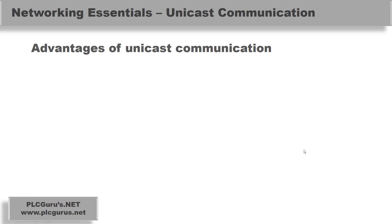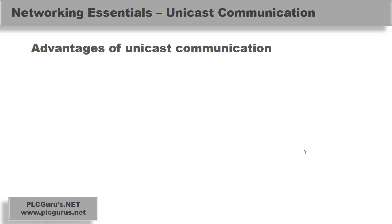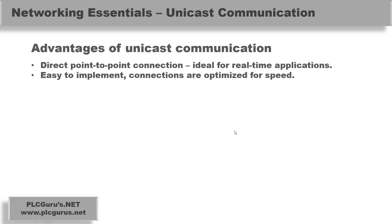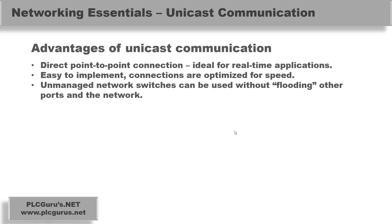The advantages of Unicast communication: it's a direct point-to-point connection, ideal for real-time applications such as PLCs, HMIs, and servo control. It's easy to implement, connections are optimized for speed, and you can use unmanaged network switches without flooding other ports — because the link is established point-to-point, the switch has learned the MAC address of the sender and receiver and has no need to go out other ports.